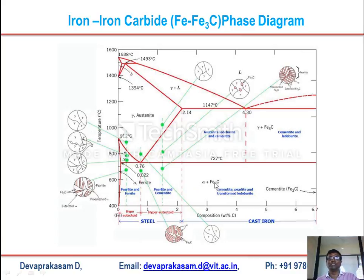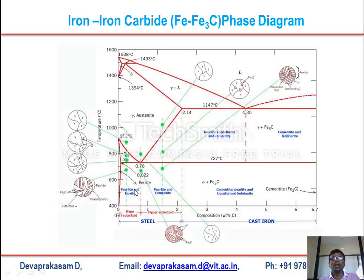In the gamma phase, if you come down below 727°C you will get alpha ferrite and cementite phases in the steel region. Anything less than the eutectoid composition of 0.76 weight% carbon is called pearlite and ferrite, and above that it is called pearlite and cementite.